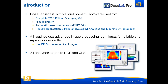Everything exports to PDF and Excel, because it's a QA product and a big part of QA is documenting what you've done. We've made sure to make the documentation built into the software tool. Also, here in the US, it's actually used by the RPC, the Radiological Physics Center, which does the auditing for about 2,000 sites in the US and some other countries to certify them to perform radiation oncology research.